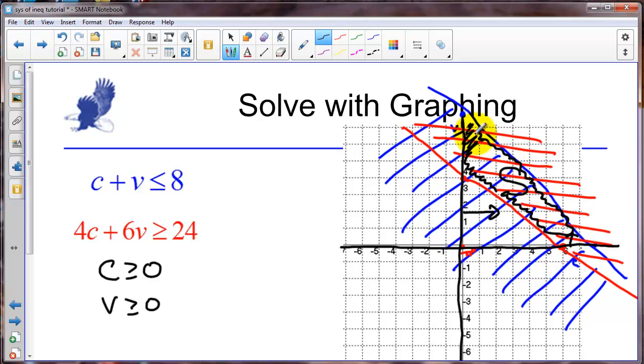So if we pick any solution. Since these were included the equals. Any solution on these boundary lines or in this space would make it true. If we wanted to check our answer we could pick a solution that is in this space.